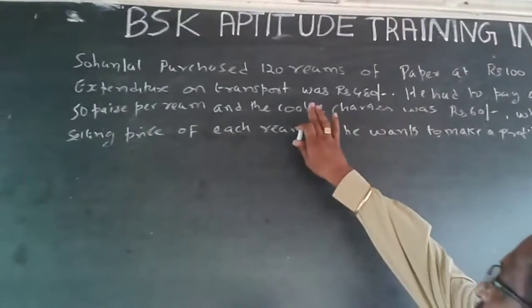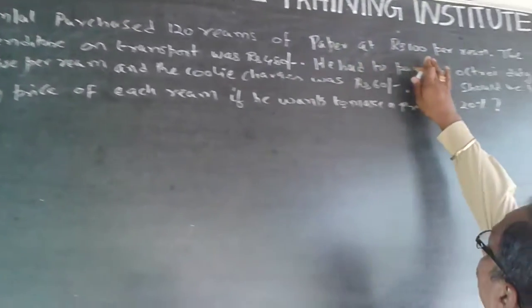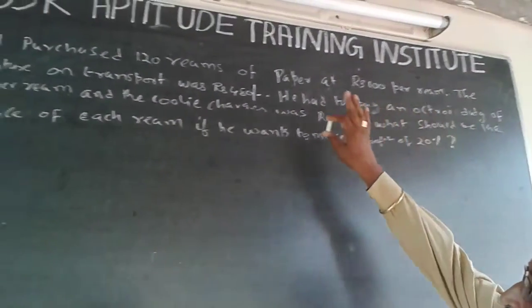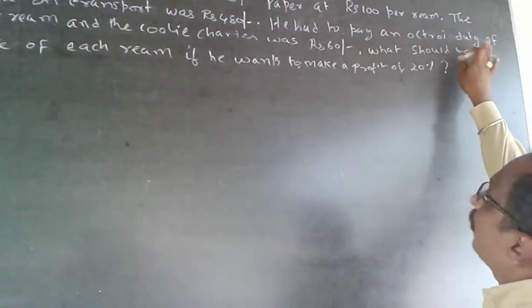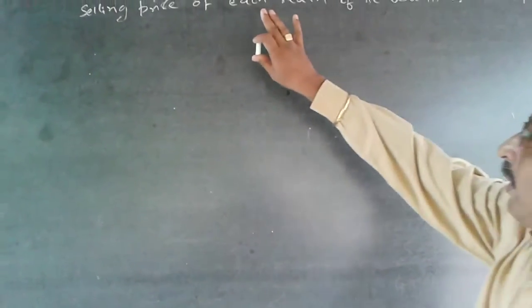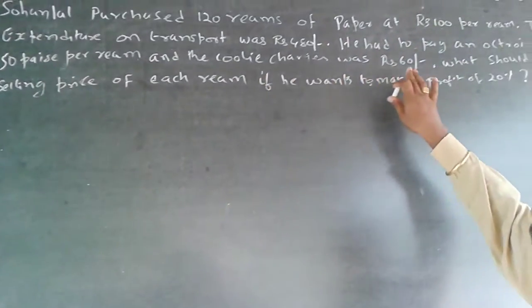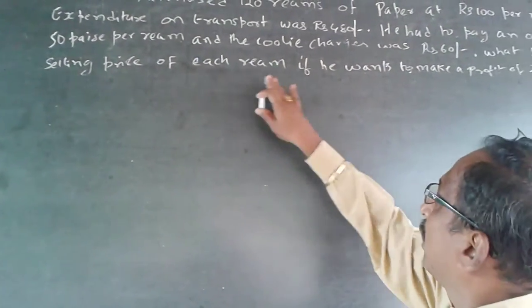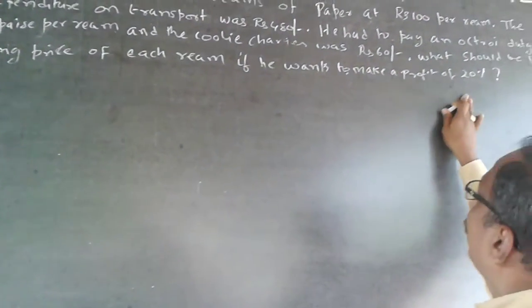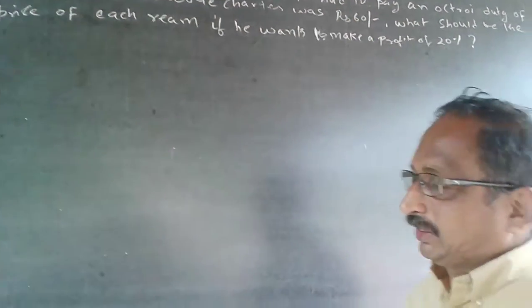The question is: an owner purchased 120 reams of paper at Rs. 100 per ream. The expenditure on transport was Rs. 480, he had to pay an octroy duty of 50 paise per ream, and the coolie charges was Rs. 60. What should be the selling price of each ream if he wants to make a profit of 20%?